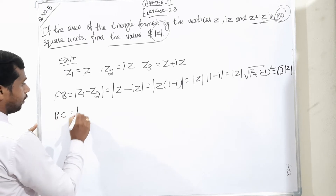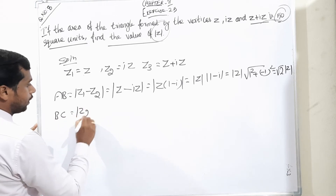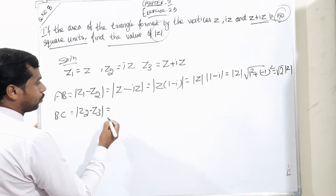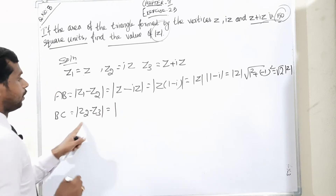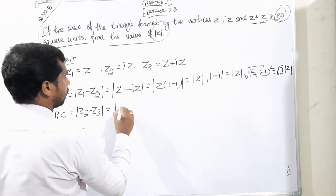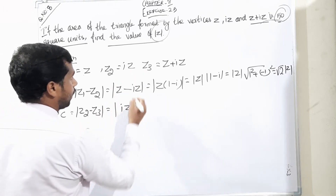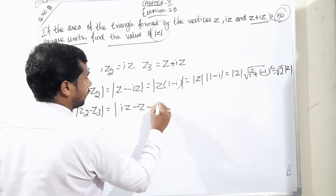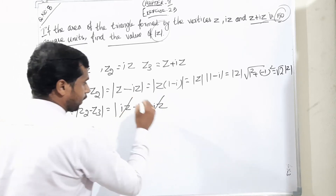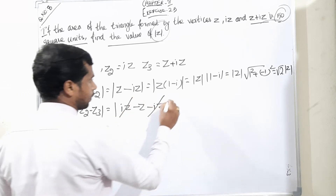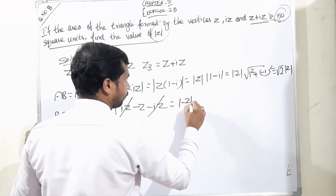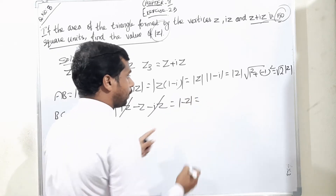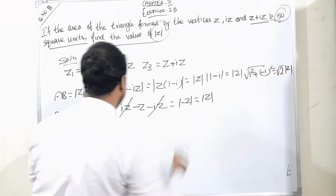Now moving to BC. BC equals modulus of Z2 minus Z3, which is modulus of iZ minus Z minus iZ. The plus iZ and minus iZ cancel, leaving only modulus of minus Z. Removing the minus sign, BC is equal to modulus of Z.